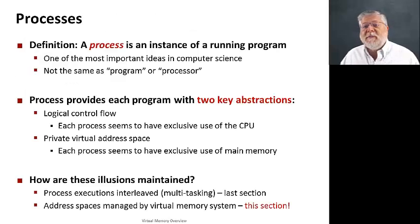So you'll remember from the last section that a process is an instance of a running program. It is a really important idea in computer science, and there's two key abstractions that a process model provides, and that is one of logical control flow, namely that each process seems to have full control of the CPU. It does everything it needs to do and doesn't really worry about other processes that are running. That's what we learned about in the previous section, how we can interleave multiple processes. The other key abstraction that a process provides is that it lets the programmer think about their program running in that process as having its own private address space.